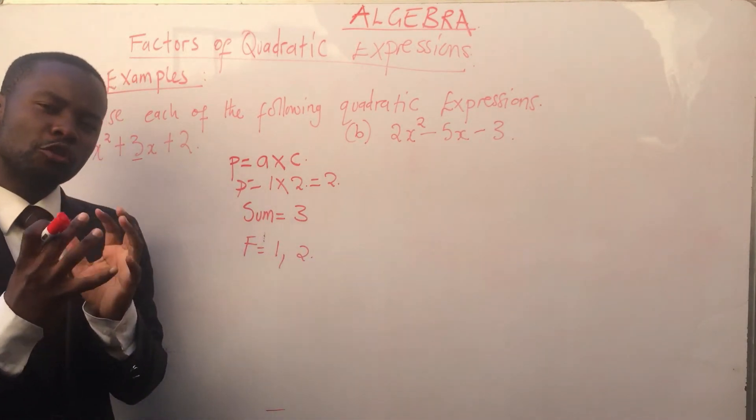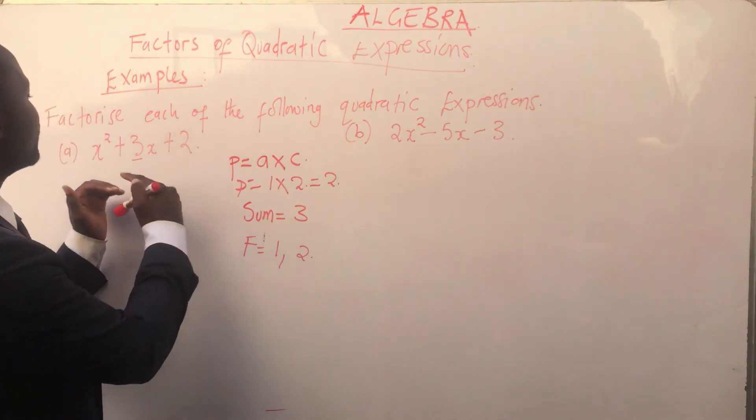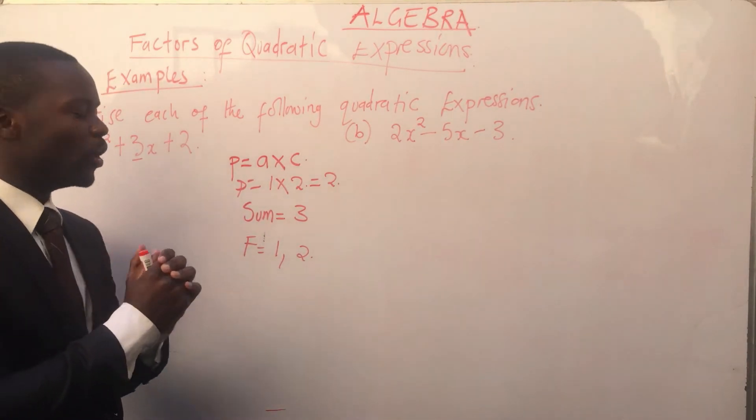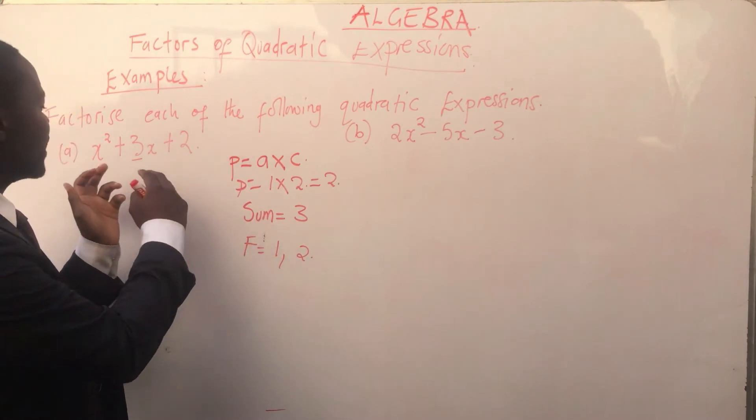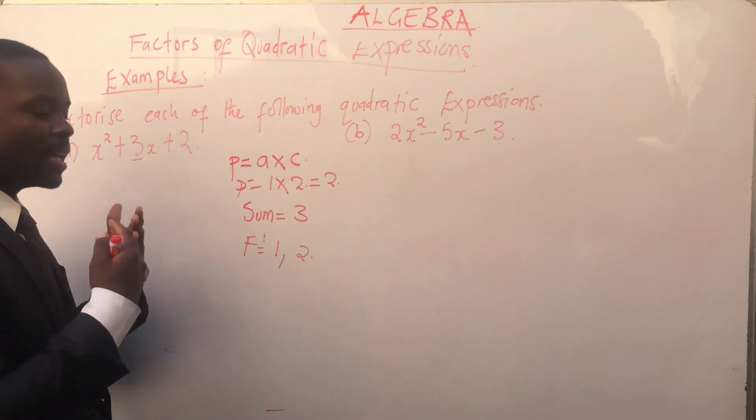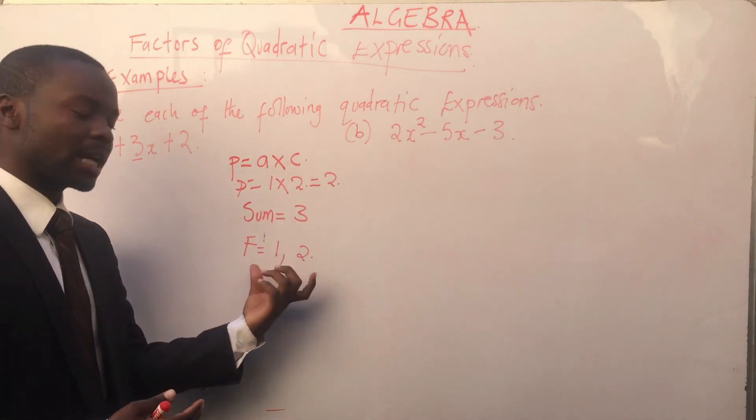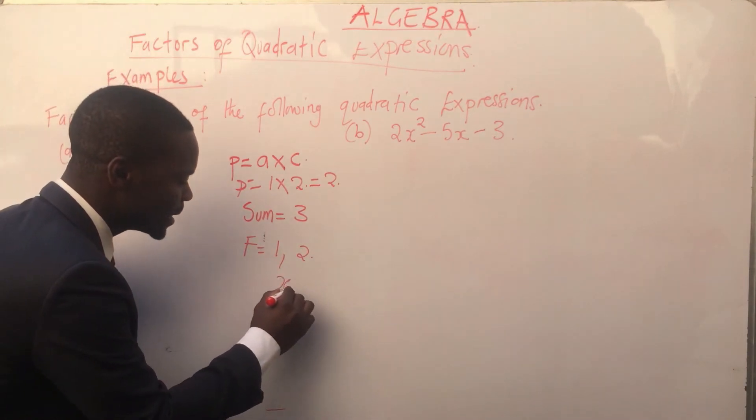When you identify your 2 factors, make sure that you express them using the variables. The variable here is x. So how can you express them? Simply multiply this factor by x. So 1 times x is x, and 2 times x is 2x.